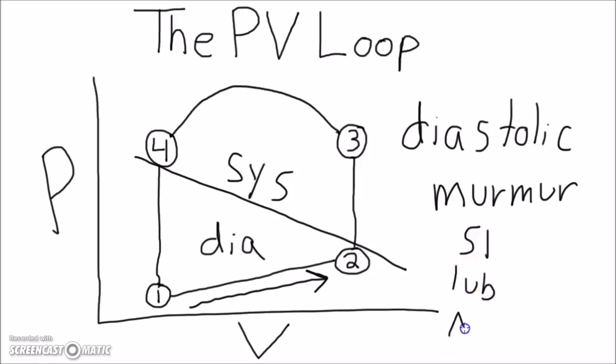So during this phase, the mitral valve must be open. The answer must be that the mitral valve opens at point 1 to allow diastolic filling.